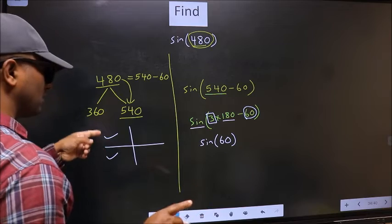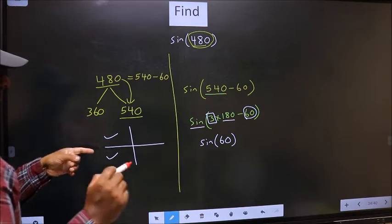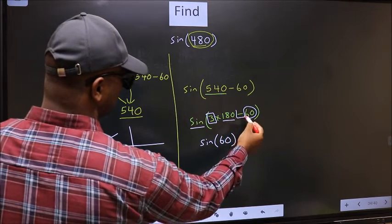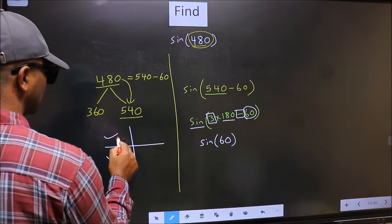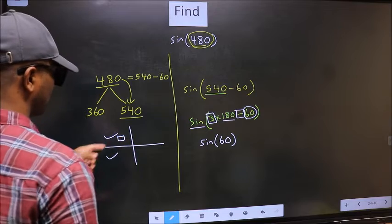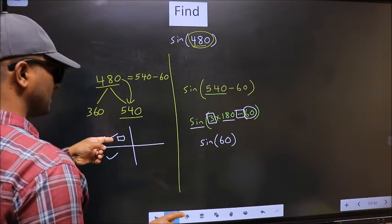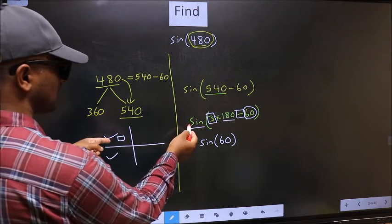So now to select the quadrant, we should look at this symbol. Here we have negative. That means the angle lies in the second quadrant. And in the second quadrant, sin is positive.